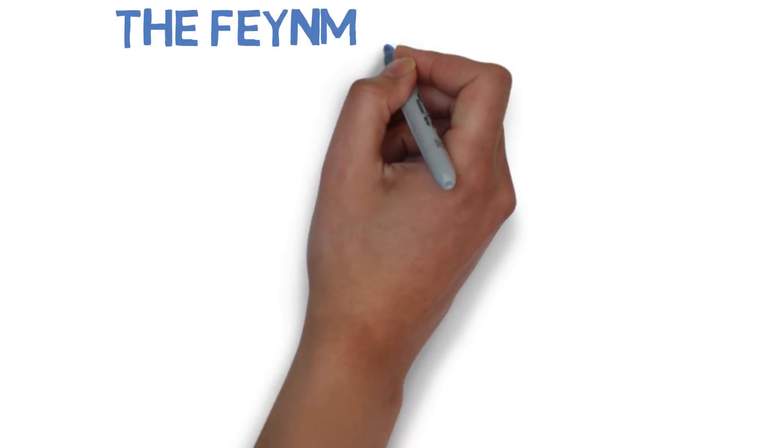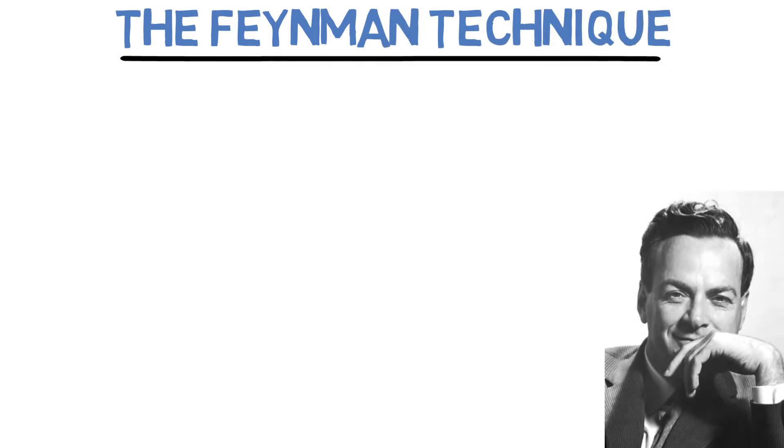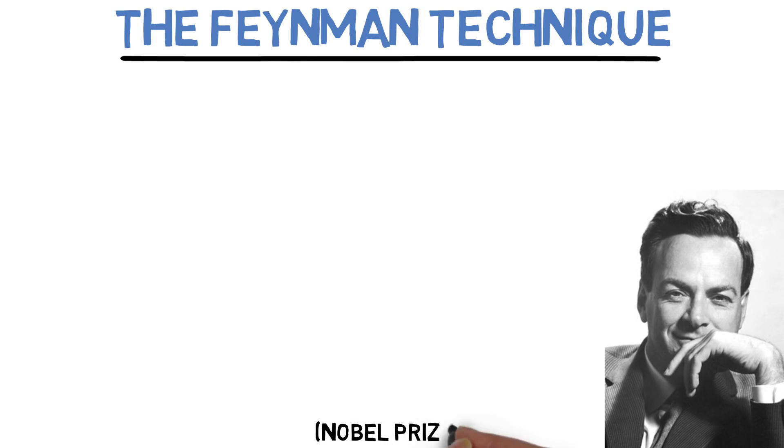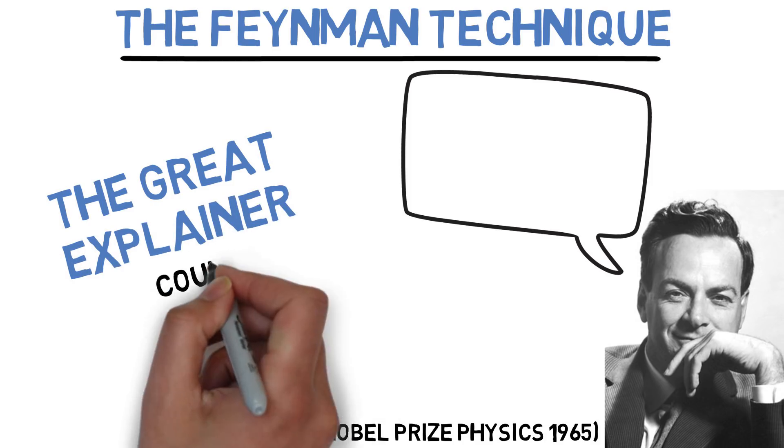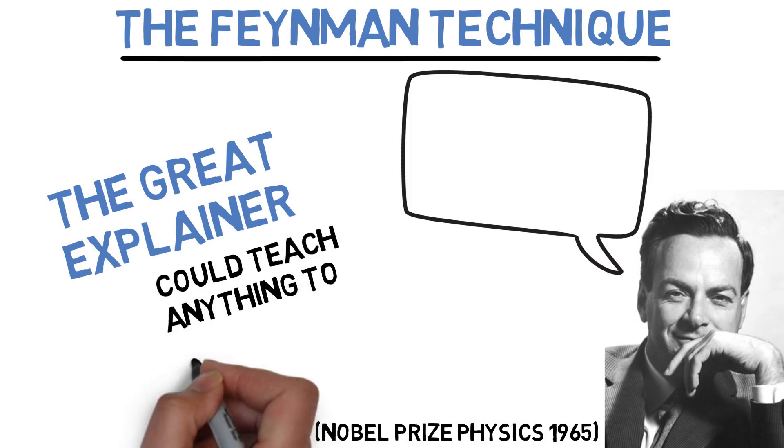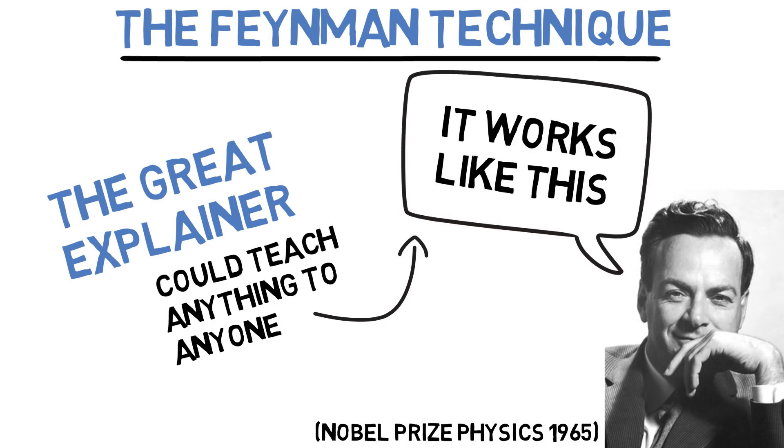Well, the most effective way to learn something is by using what's called the Feynman Technique. Invented by the legendary Professor Feynman, a Nobel Prize winning scientist who was also known as the Great Explainer. He was known for his ability to explain extremely complicated concepts to just about anyone. And here's how the Feynman Technique works.